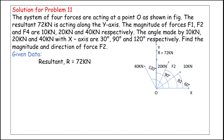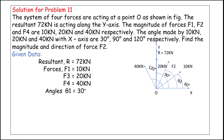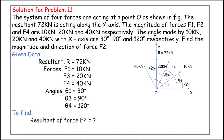Given data: Resultant R = 72 kN; F1 = 10 kN, F3 = 20 kN, F4 = 40 kN; angles θ1 = 30°, θ3 = 90°, θ4 = 120°. To find: magnitude of force F2 and its direction angle θ2.